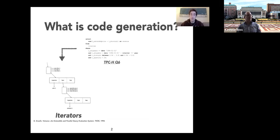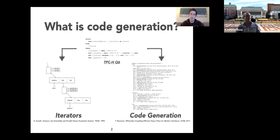Code generation means taking the query and translating it directly to machine-executable code — in this case, LLVM code. Unlike the abstract iterator-based approach, it's very low-level and efficient, particularly relevant in the age of main memory database systems. We can generate this code, compile it directly to an executable, run it, and get the result. Examples are shown for in-memory OLAP style queries over column store systems.